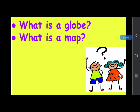Now you need to answer: what is a globe and what is a map? You can answer to your partner. A globe is a spherical representation of the earth, and a map is a representation of the earth on a flat surface. A collection of maps is called an atlas.